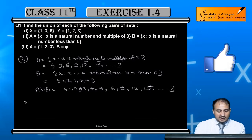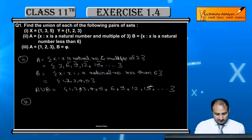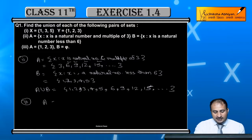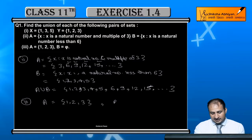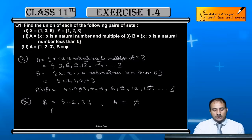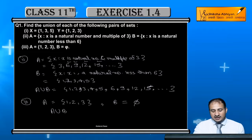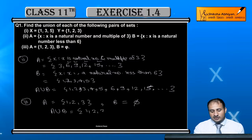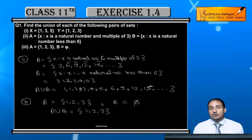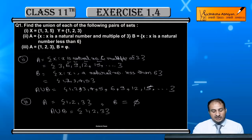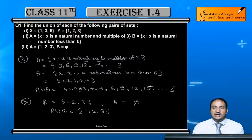Now we do the 3rd part. Here Set A = {1, 2, 3} and Set B is equal to the null set. If you find the union of any set with a null set, then A union B = {1, 2, 3}, since B has no elements.